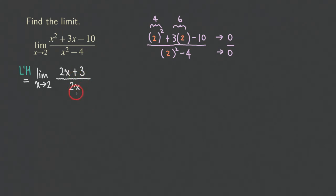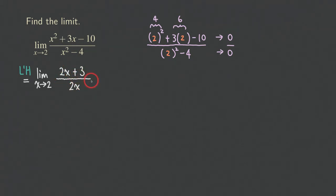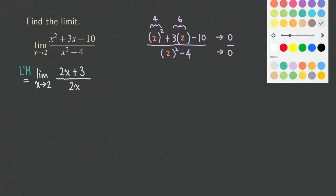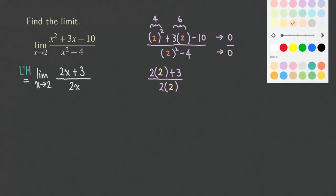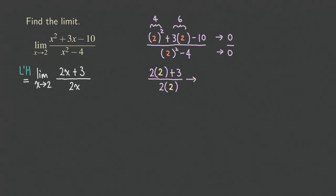At this point, don't just keep differentiating the top and bottom. You need to check again to make sure it's still in indeterminate form before deciding whether to apply L'Hôpital's rule again. Doing a quick check with direct substitution: the numerator is 2 times 2 plus 3, and the denominator is 2 times 2. We do not get 0 over 0 here, so we cannot apply L'Hôpital's rule again. Instead, we can directly substitute to find the limit.